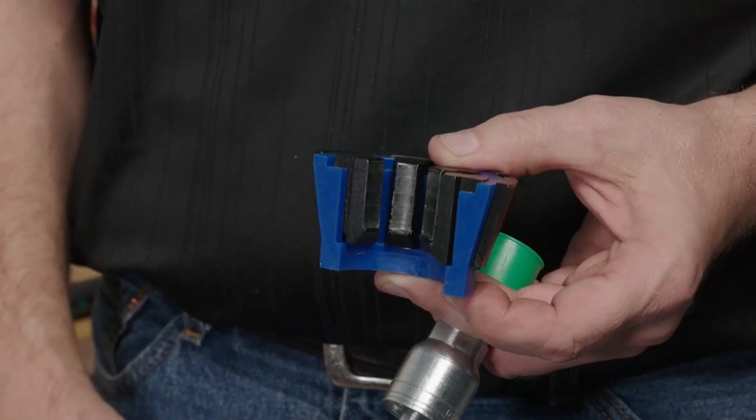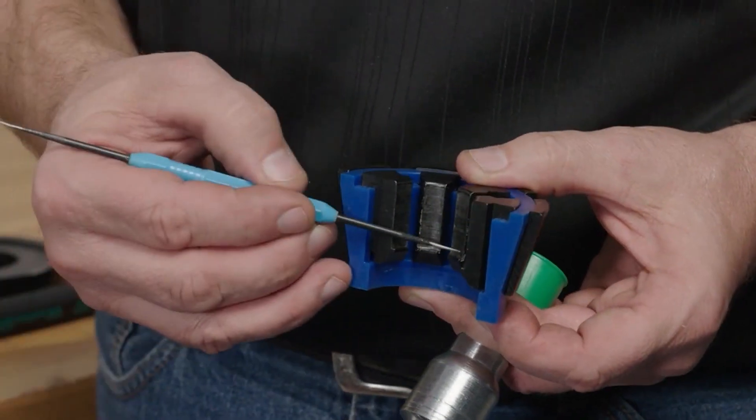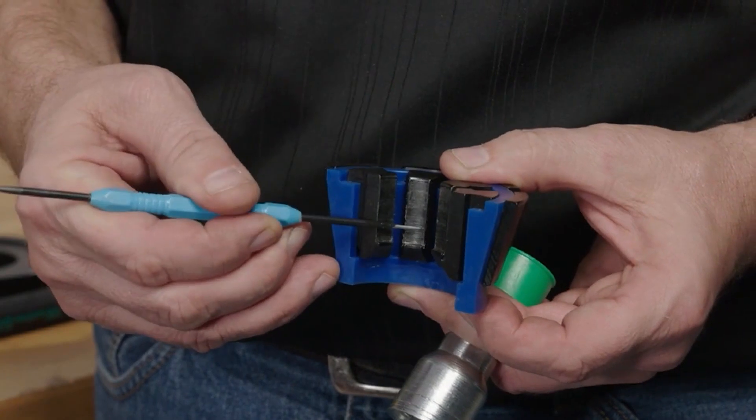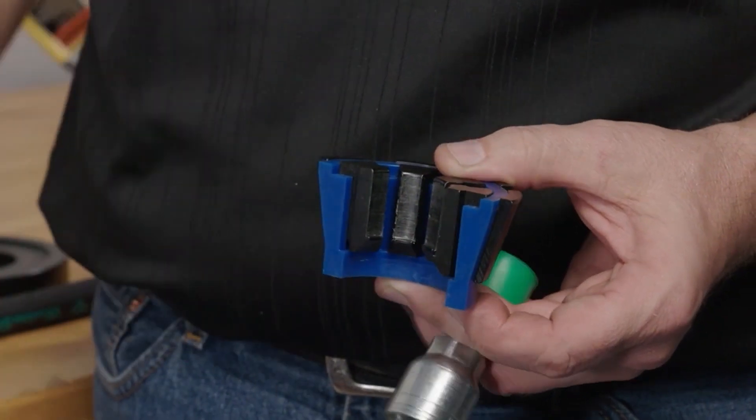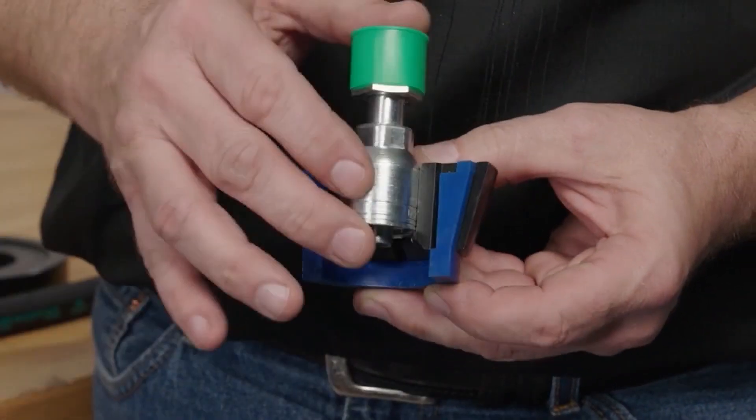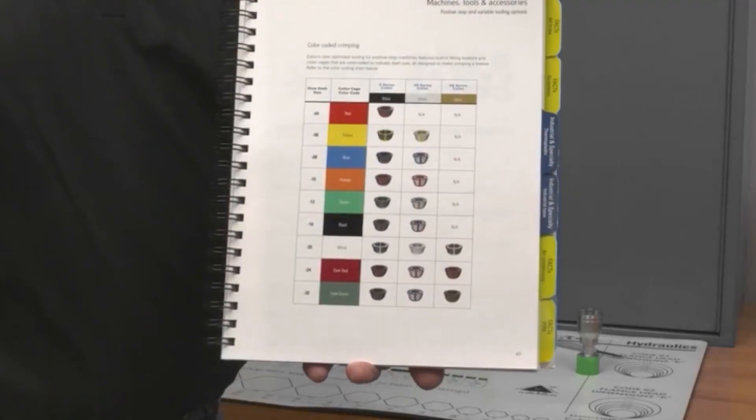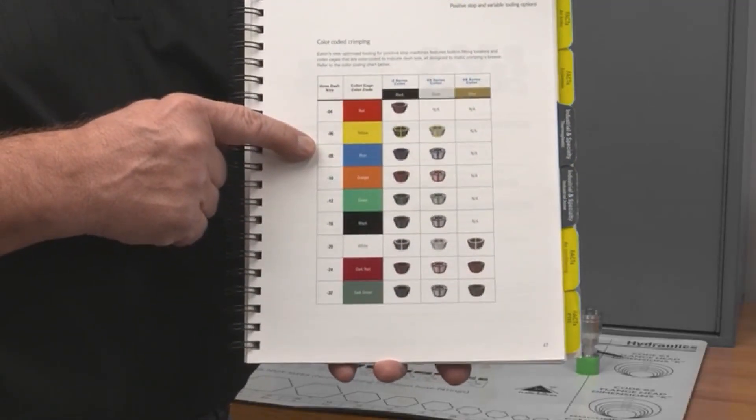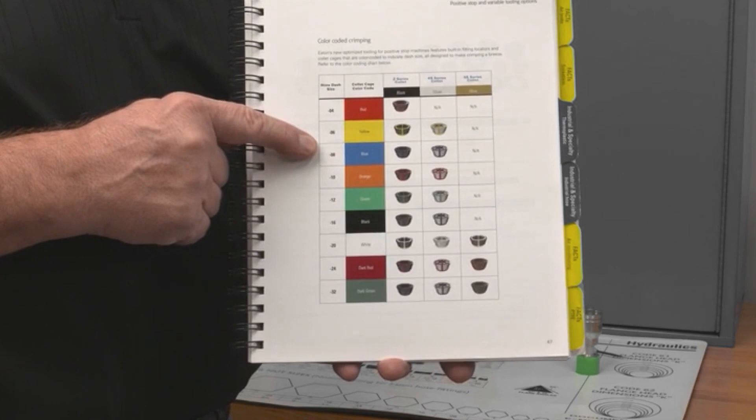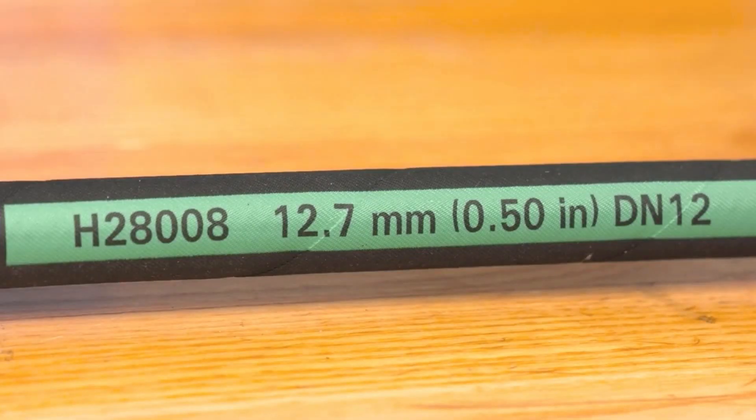Danfoss optimized tooling for positive stop machines features built-in fitting locators and collet cages that are color coded to indicate dash size. The collet segment colors indicate the fitting series as shown in this chart.